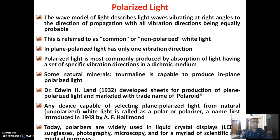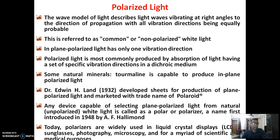Regarding polarized light: the wave model of light describes light waves vibrating at right angles to the direction of propagation, with all vibration directions being equally probable — this is referred to as common or non-polarized light. Plane polarized light has only one vibration direction, and is most commonly produced by absorption of light having a specific vibration direction in a dichroic medium. Some natural minerals like tourmaline are capable of producing plane polarized light.